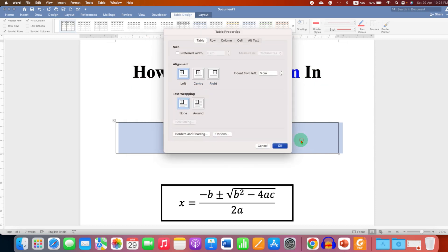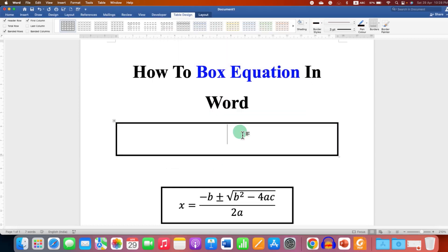and then click OK and OK. So now we have increased the thickness of the line. Now to add equation inside this table, just select the equation that you have already typed or you are going to type, click